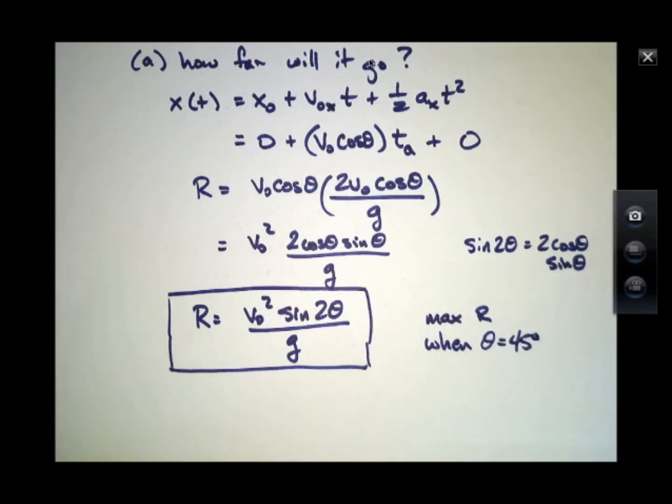And so football players know that if you're going to punt, you don't punt straight up and you don't punt straight forward. You punt at an angle of 45 degrees or something pretty close to that if you want the ball to go as far as you can.